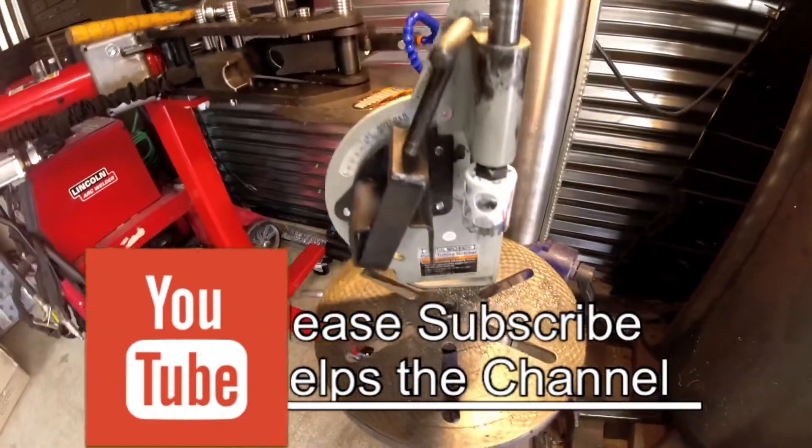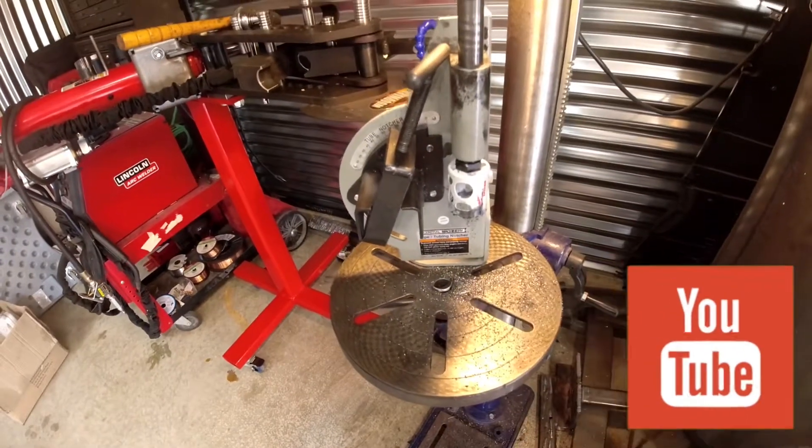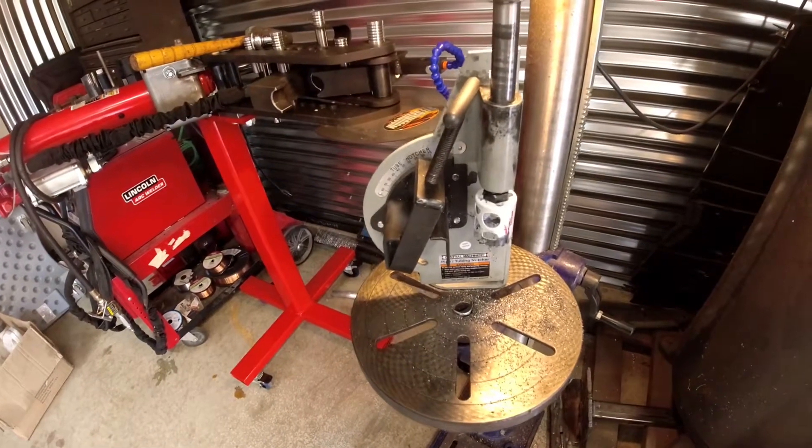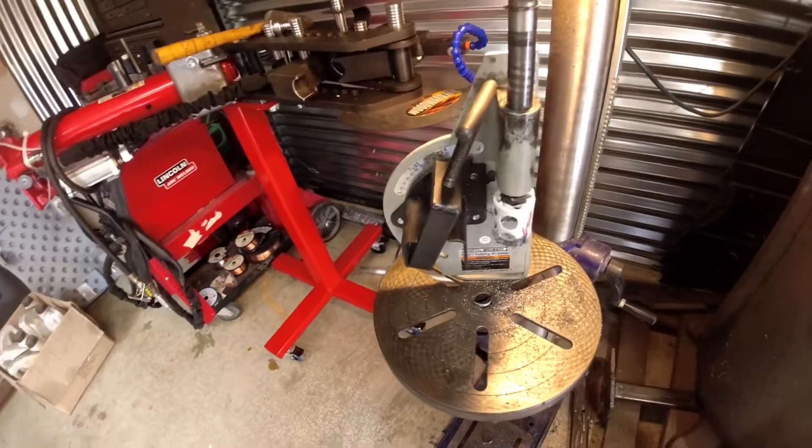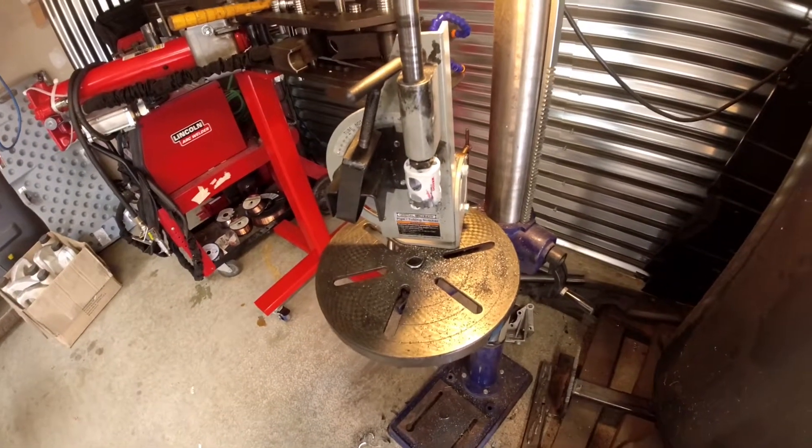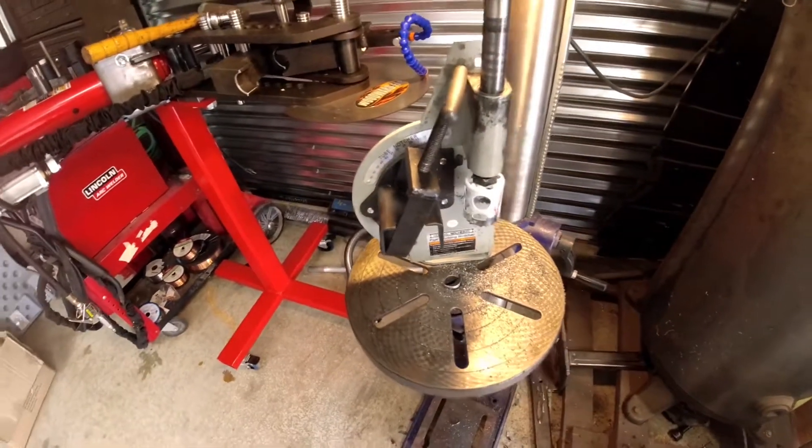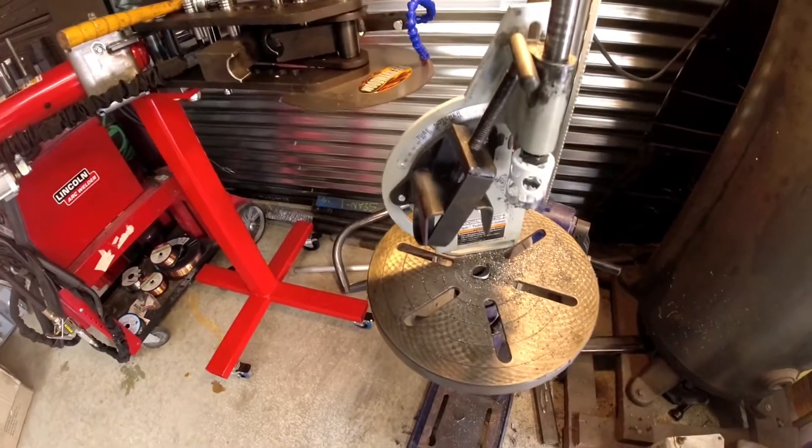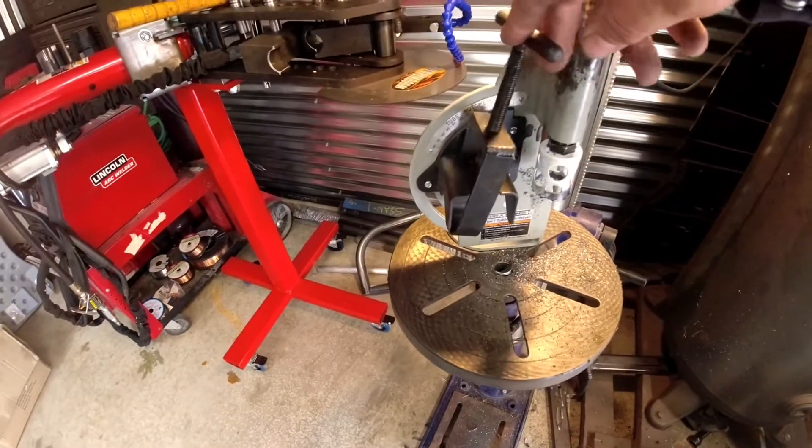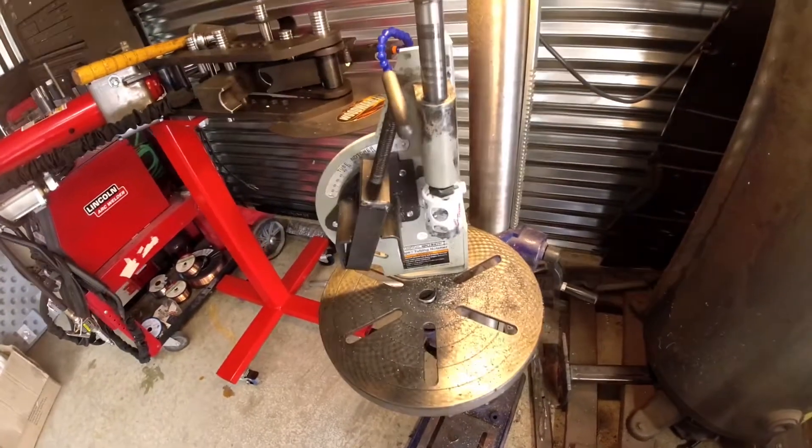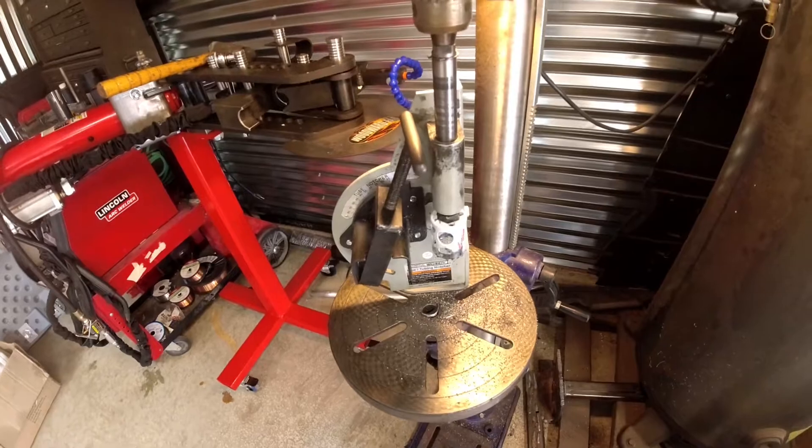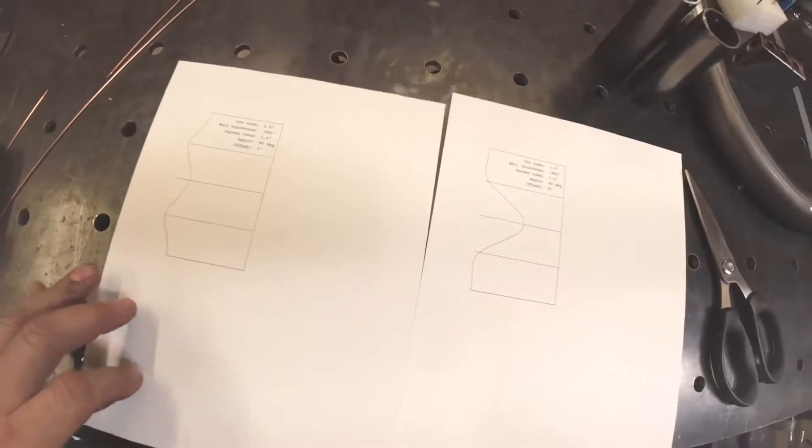First off, we have our standard tube notcher. It just takes a hole saw and this isn't a very expensive one - this is a Harbor Freight model, so obviously not that expensive. If you have multiple tubes you have to notch all the same angle, this is a pretty nice way to go. Just tighten in the clamp and we'll do one here in a little bit.